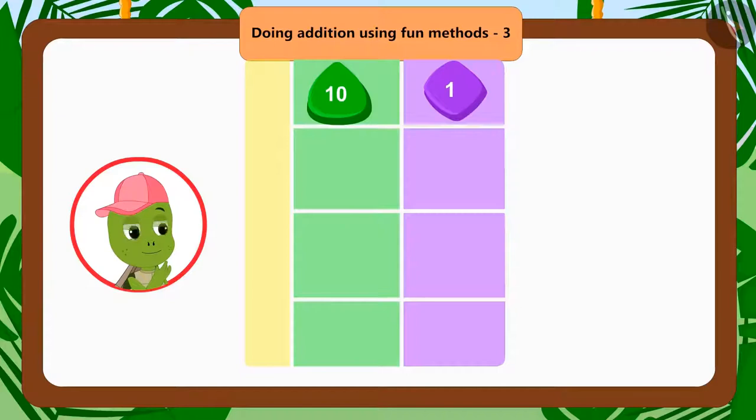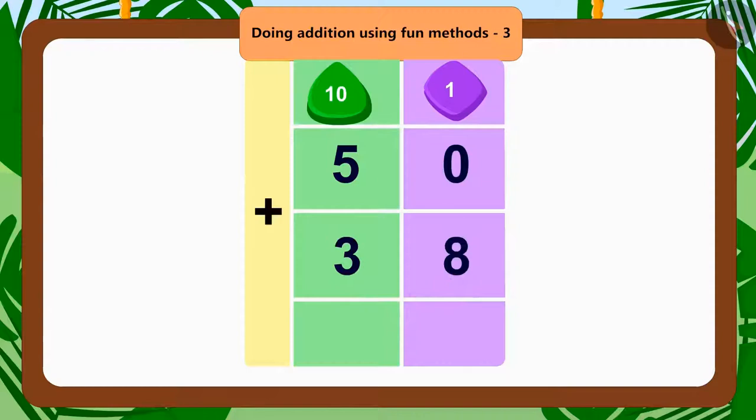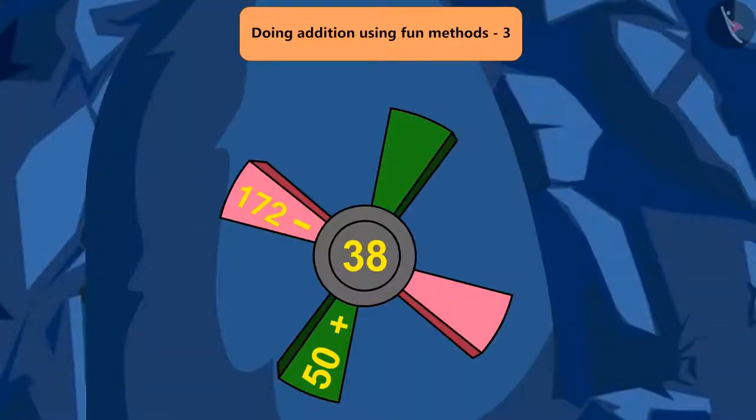Let us first solve the addition question on the windmill. If we add 38 to 50, what will be the total? That's right, 88. Come, let's fill the blank space.